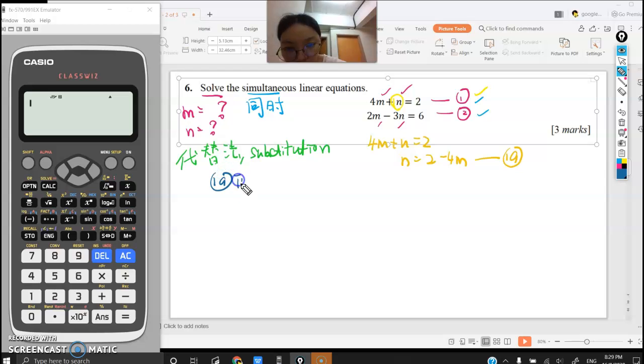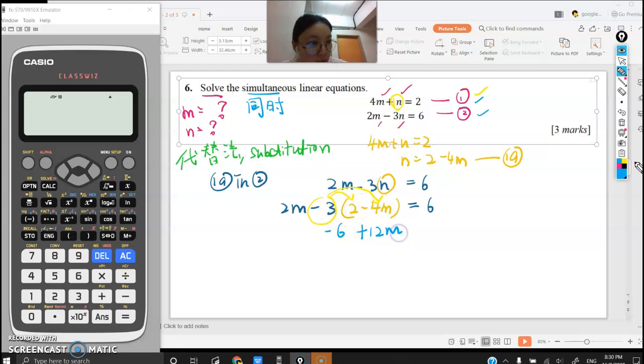Now I substitute equation 1 into equation 2. Writing the second linear equation: 2M - 3N = 6. I'll substitute for N using N = 2 - 4M. So this becomes 2M - 3(2 - 4M) = 6. Now expanding the brackets: negative 3 times 2 equals negative 6, and negative 3 times negative 4M equals positive 12M.